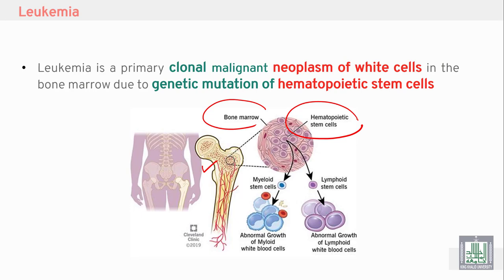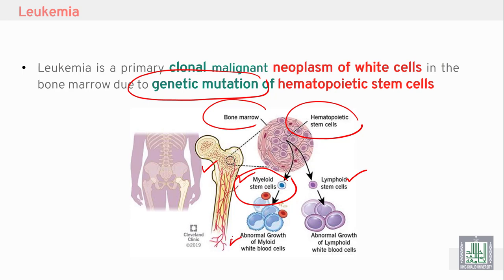Hematopoietic stem cells give rise to myeloid stem cells and lymphoid stem cells. If we have a genetic mutation of myeloid stem cells, we will have abnormal growth of myeloid white blood cells, resulting in myeloid leukemia. If we have a genetic mutation of lymphoid stem cells, we will have lymphoid leukemia.